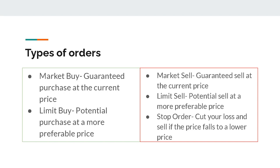A stop order means that if the price falls to a certain level, you cut your losses and prevent yourself from losing more. That's a little tricky because sometimes it can hit your stop and then go right back above that price. So you want your stop set a little bit low to give the stock some room to move, but not so low that you lose more than you anticipate.